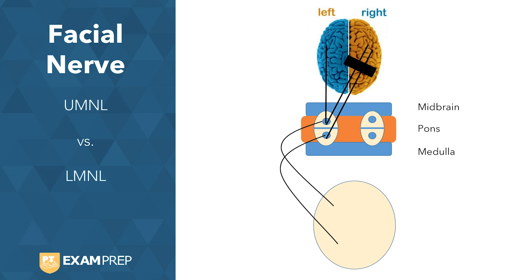Now let's take a look at what happens with a lesion. If we have a lesion to the brain, we can see that there are two pathways affected. The first pathway affected means we won't have innervation to the face from the right side of the brain, and we also won't have innervation to the bottom of the face. What we will have is the left side innervating the top of the face. So the eye is still innervated because it has dual innervation from left and right, and only the bottom of the face is affected.